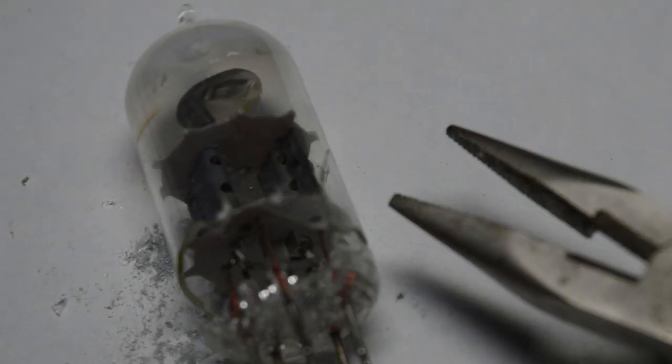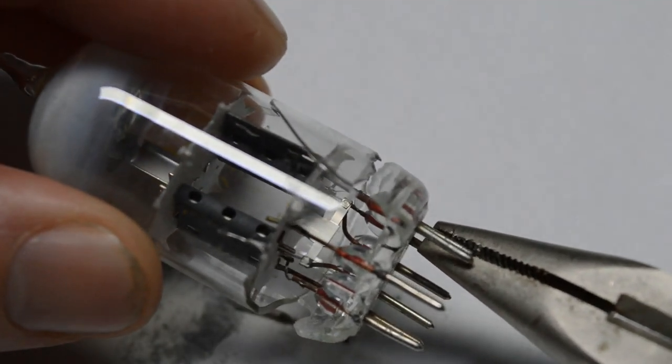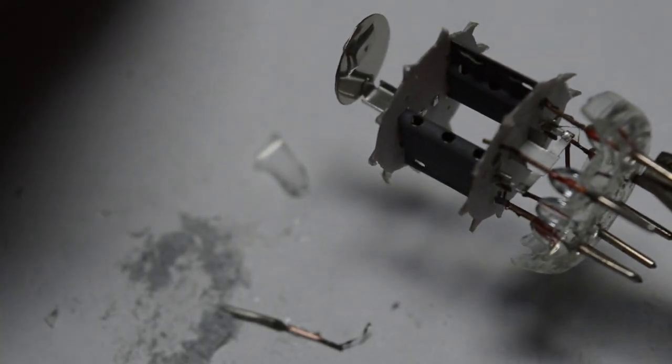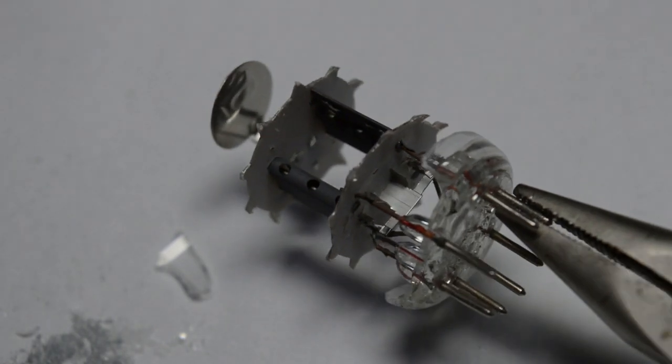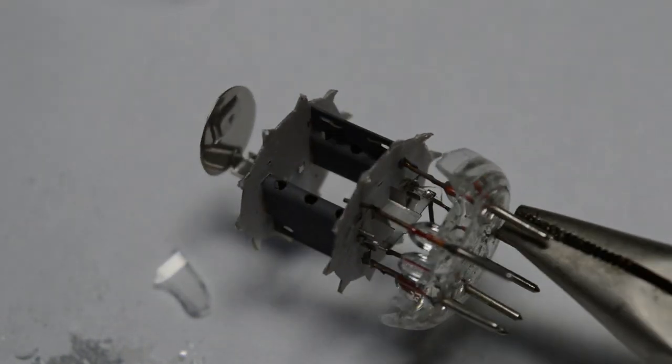So I decided to get a proper tool to disassemble this tube. And now we can simply slide out the internals from the old glass envelope. And this is basically what we're left with, the tube without the glass.